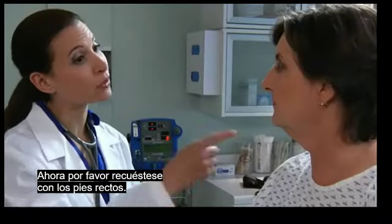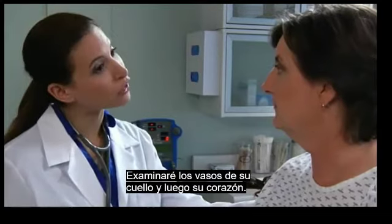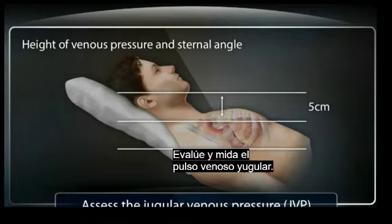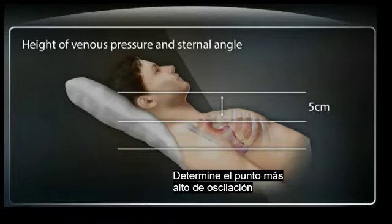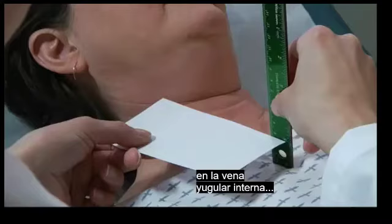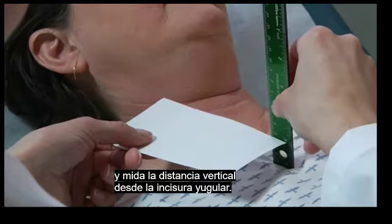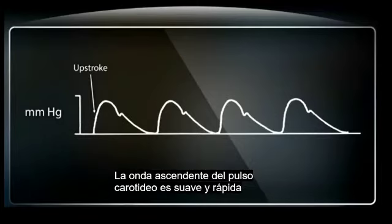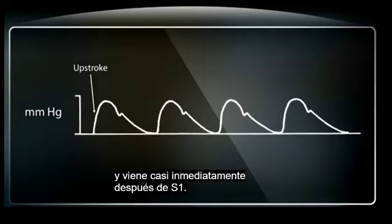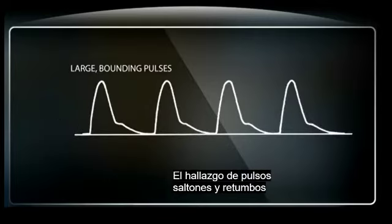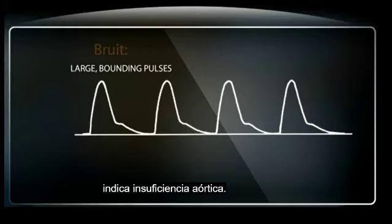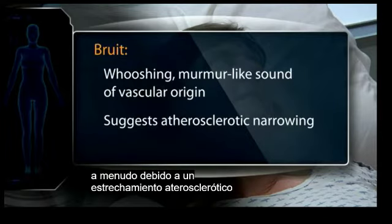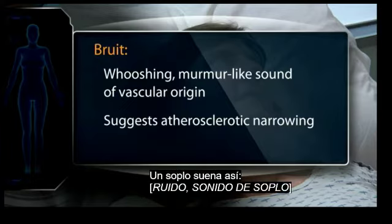I'll be examining the vessels in your neck, and then your heart. Please lie back with your feet straight out. Examine the neck first. Assess the jugular venous pressure — find the highest point of oscillation in the internal jugular vein and measure the vertical distance from the sternal angle. Palpate carotid upstroke. The normal upstroke is brisk, smooth, and rapid, and follows S1 almost immediately. Large bounding upstrokes indicate aortic insufficiency. Listen for a bruit, which is a whooshing murmur-like sound, often from atherosclerotic narrowing of the carotid artery.